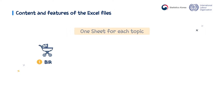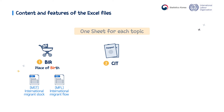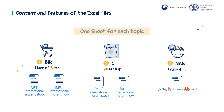Let's look closer at the content of the downloaded Excel files. The first Excel file, the BIR file where migrants are defined based on country of birth, includes two sheets. The first sheet is named MST and covers the International Migrant Stock Indicators. The second sheet, named MFL, covers the International Migrant Inflow, or Incoming Flow Indicators. The CIT file is similar, the only difference being the definition of migrants based on country of citizenship — it also includes one sheet for stock indicators and another for inflow indicators.